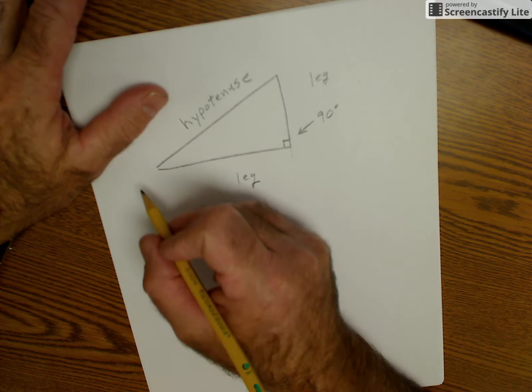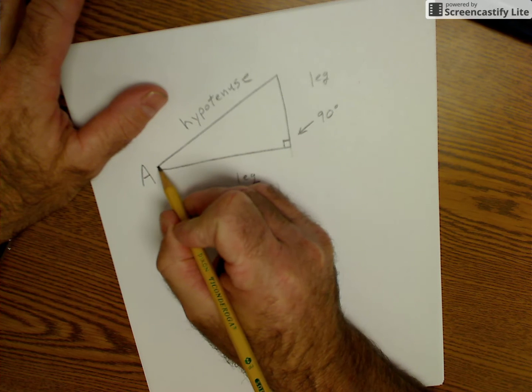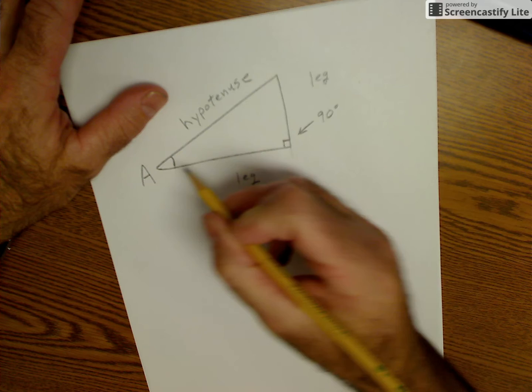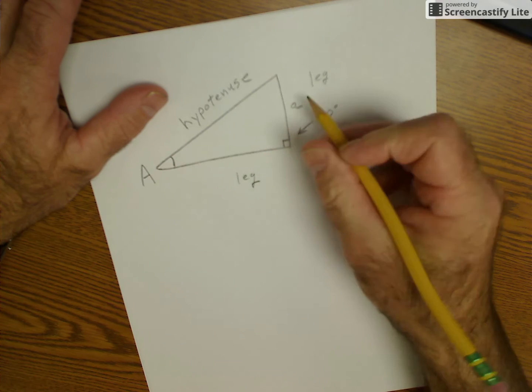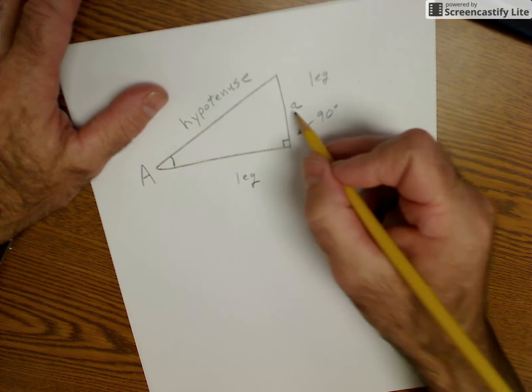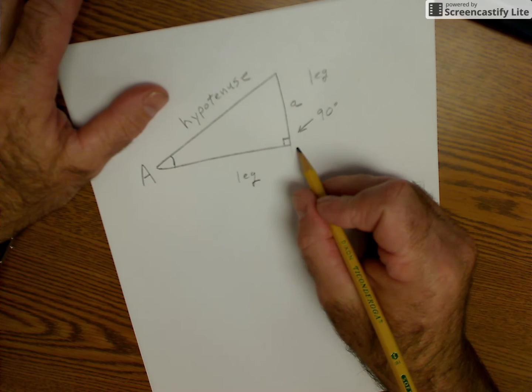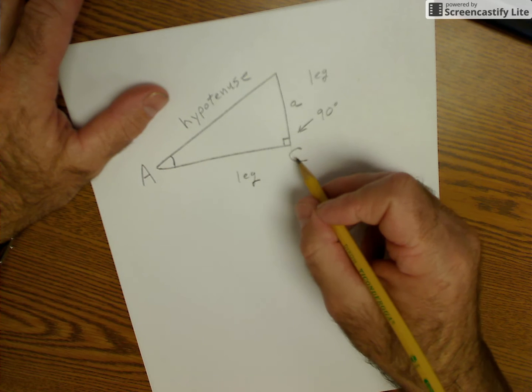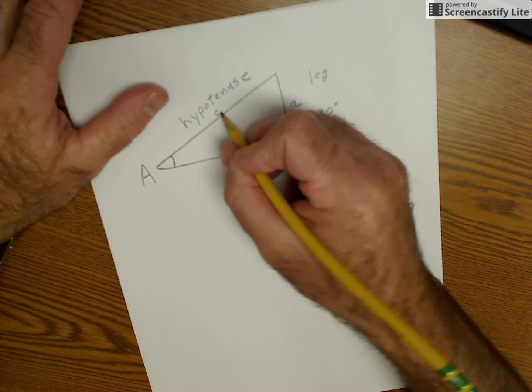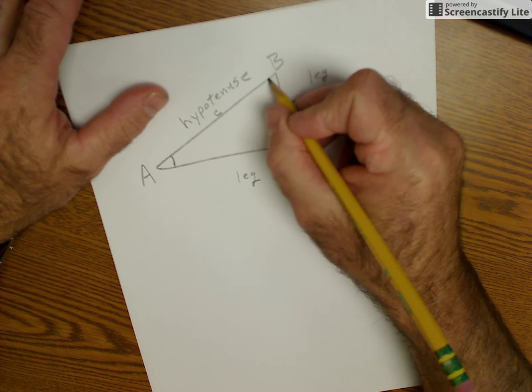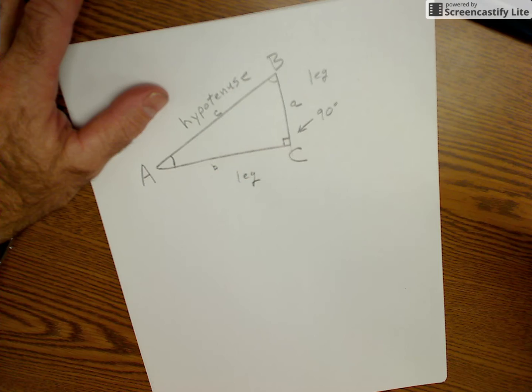Uppercase letters represent an angle. So if I call that angle A, that would be that angle. Lowercase letter is the length of the side opposite that given angle. Usually you use C to represent the right angle, capital C, and then lowercase c, angle B, and side b.